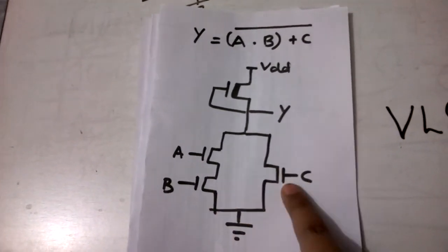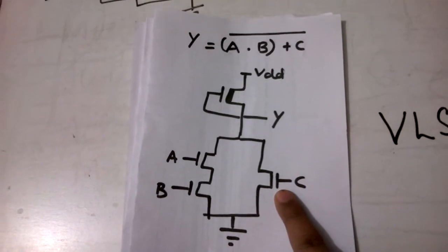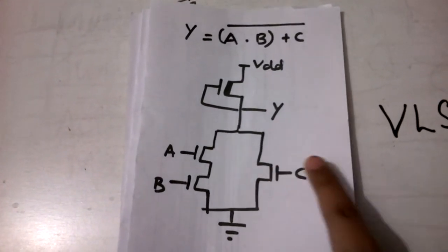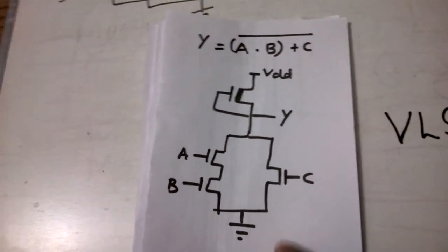We discussed earlier only that a dot will represent a series connection and plus will represent a parallel connection. So this is the NMOS logic structure for the given expression.